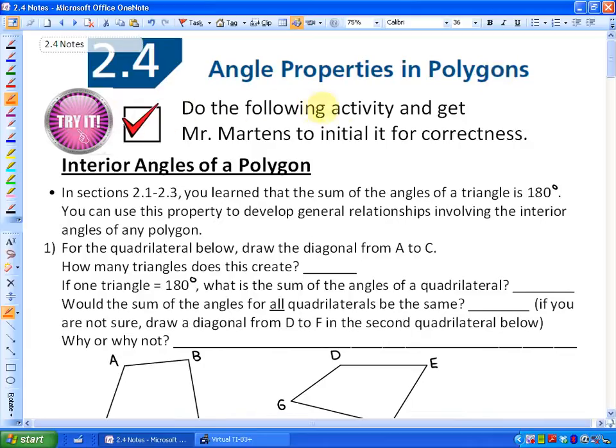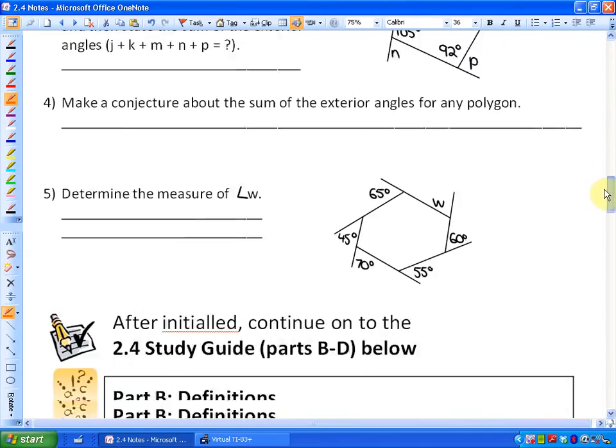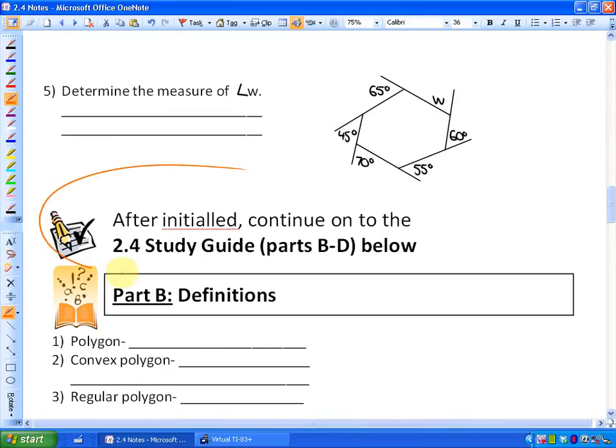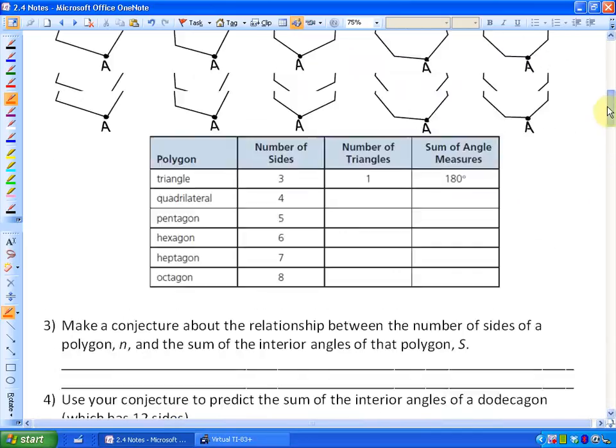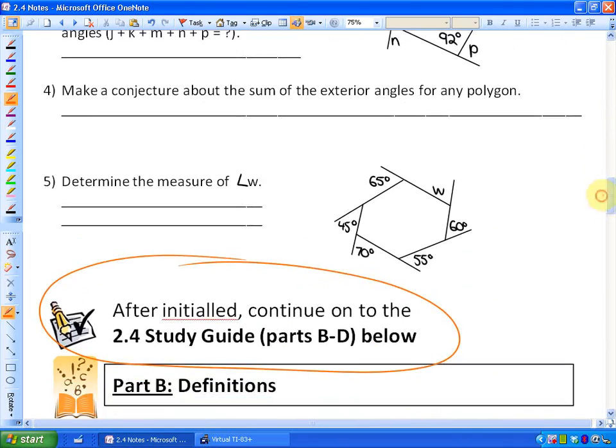This activity says do the following activity and get Mr. Martens to initial it for correctness. So if you've already done this activity and Mr. Martens has already initialed it for correctness, you can just skip to the next video or go to the next assignment right after this activity. So again, if it's initialed, you are going to want to start to work on this study guide right here. If it's not initialed, what you're going to want to do is do the activity all the way up until it tells you about this activity.